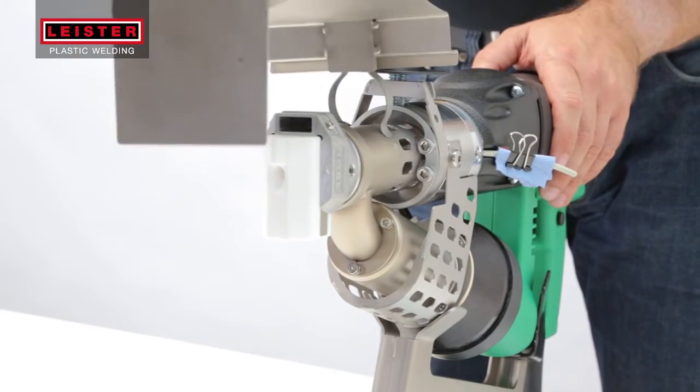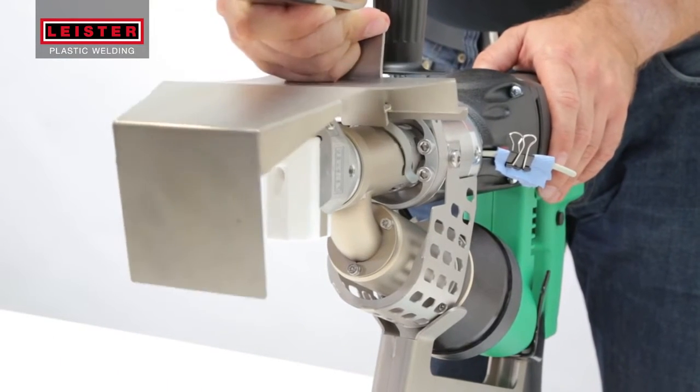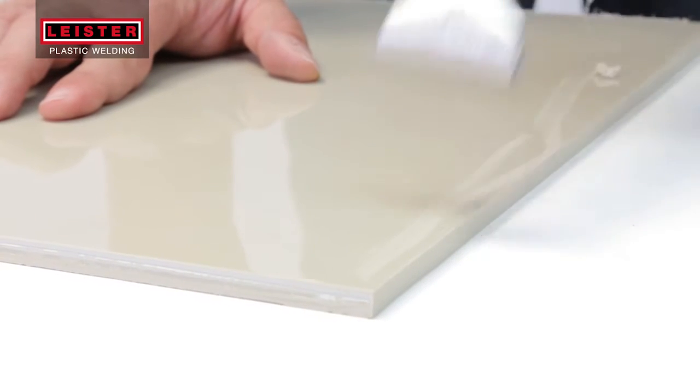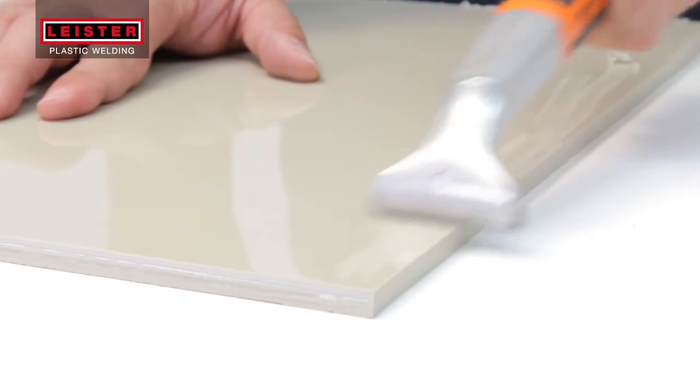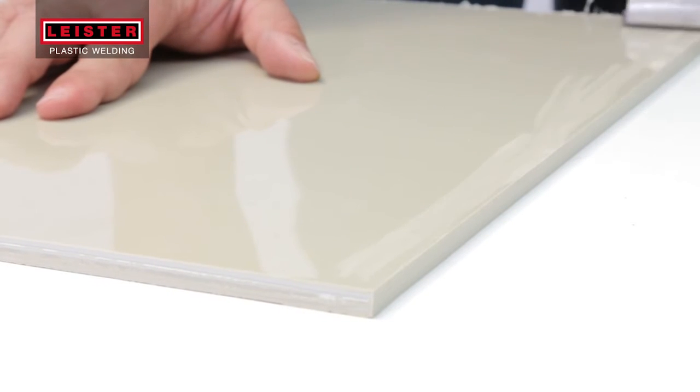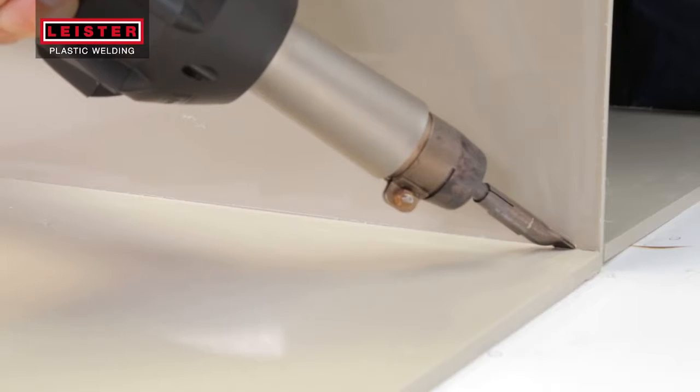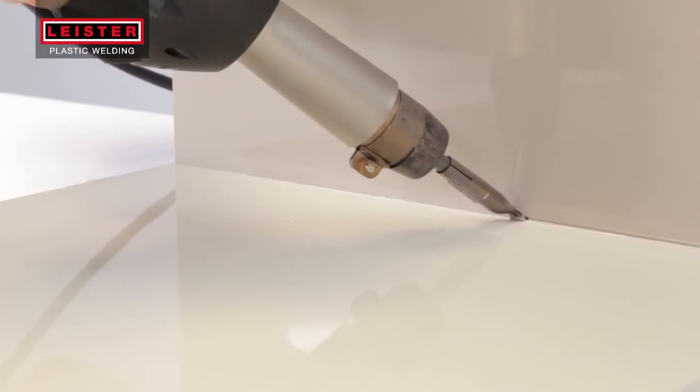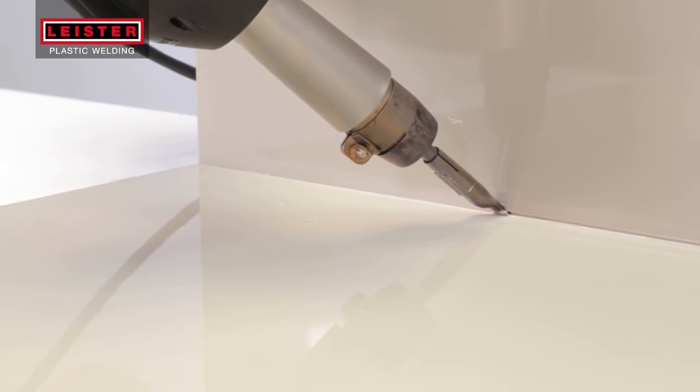Use a Leister preheating reflector to preheat the welding shoe and maintain welding shoe temperature while at rest. For an ideal welding seam result, remove the invisible oxide layer from your material using a scraper. If necessary, parts can be tacked for welding using a Leister hot air hand tool and tacking nozzle.